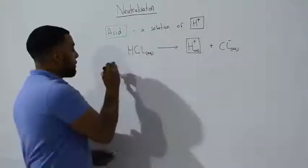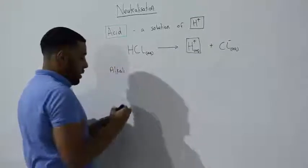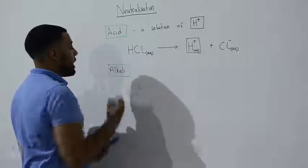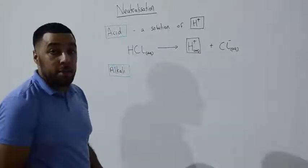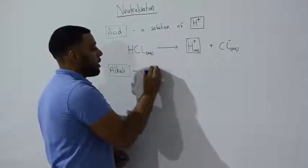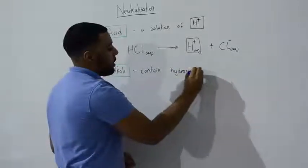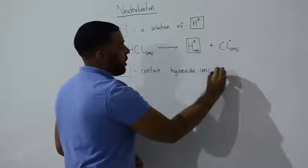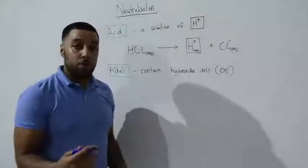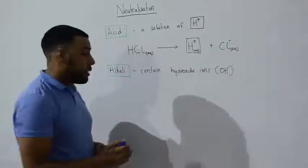And let's look at an alkali. In our previous video we looked at a few examples of alkalis. And we said that alkalis contain these hydroxide ions. This right here is our hydroxide ion.